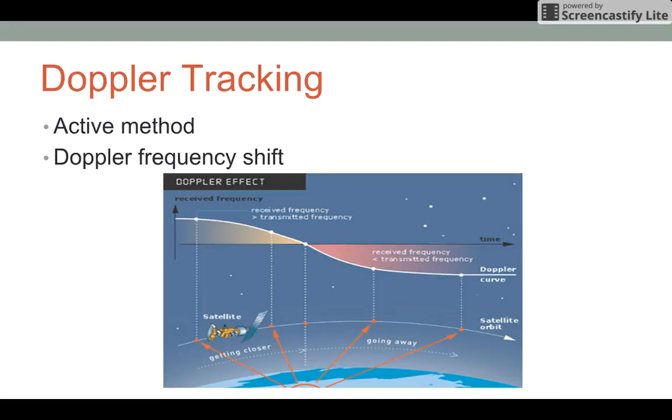The second method of orbital determination that we're going to go over is another active radio method, which is Doppler tracking. As seen by the image below, there's a satellite passing over a ground station where the satellite's approaching the ground station, the received frequency on the ground is greater than the actual transmitted frequency due to the speed of the satellite approaching.